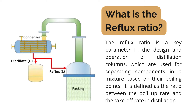To make it clearer: imagine you are boiling a mixture to separate different components. The vapor rises, and when it condenses, part of it is sent back down to the column as reflux while the rest is collected as the final product. The reflux ratio is the proportion of this recycled liquid to the liquid collected as the final product. A higher reflux ratio generally improves separation but requires more energy, while a lower reflux ratio may save energy but is less effective.